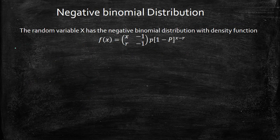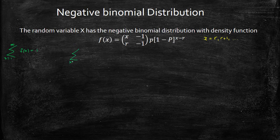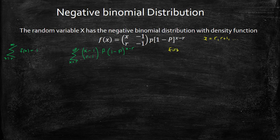For the negative binomial distribution, the summation of f(x) should equal 1, where x goes from r to infinity. So the summation from x equals r to infinity of x minus 1 choose r minus 1 times p times (1 minus p) raised to (x minus r) should equal 1.